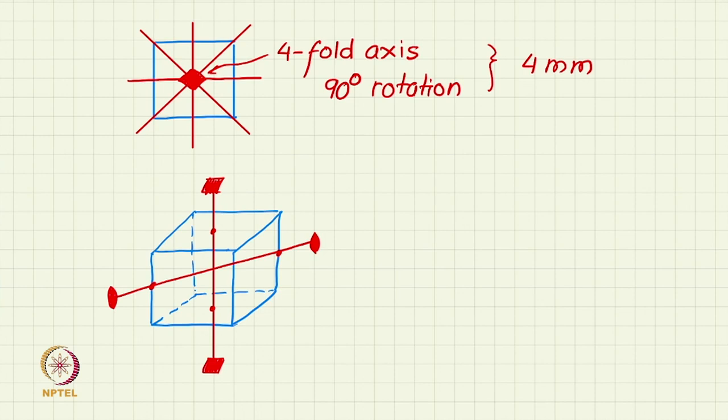But interestingly, the most interesting and the defining symmetry of the cube comes from its body diagonal, which is not so immediately obvious also, that this axis is actually a 3-fold axis. That is, the rotation of 120 degrees brings it into self-coincidence.